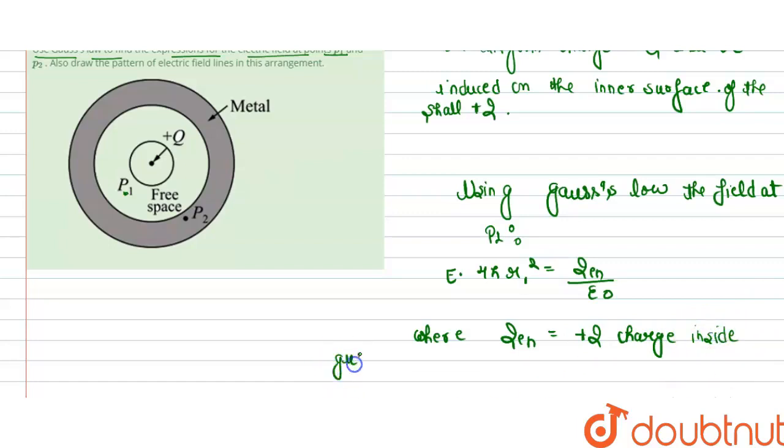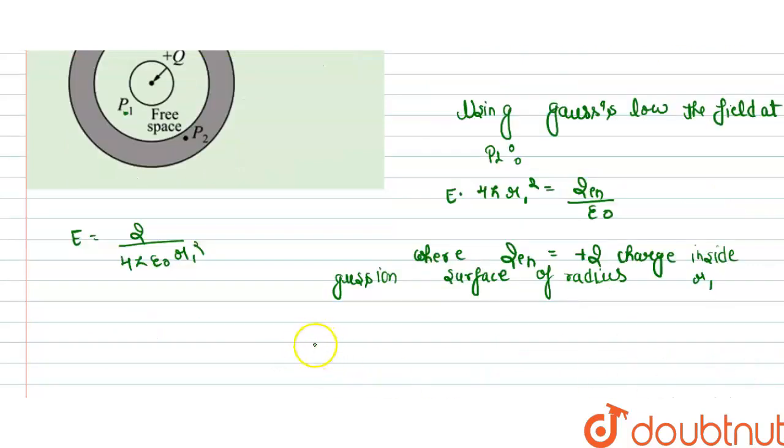That means E is equal to Q upon 4 pi epsilon naught r1 square. So this is the answer of question and thank you for watching.